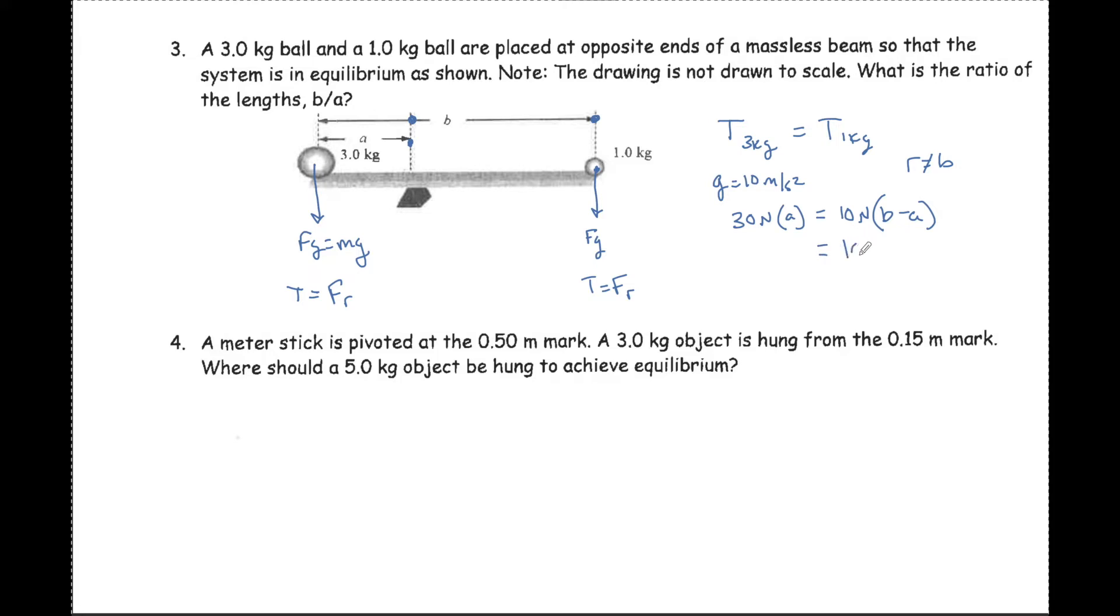Then we have 40A equals 10B. They want the ratio of B to A, so I'll divide by 10A to make this simpler. When these cross out, we see that B over A equals 4.